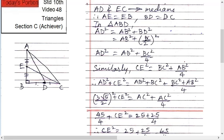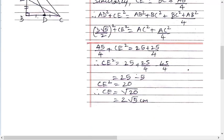But what is AB square plus BC square? And what is BC square plus AB square? BC square plus AB square. Again, AC square. So AC square upon 4.